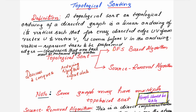I will give the definition for topological sorting, explain it with an example, and discuss the time complexity. A topological sorting, or topological ordering, of a directed graph is a linear ordering of its vertices such that for every directed edge u to v, u comes before v in the ordering. Vertices represent tasks to be performed and edges represent the constraints that one task must be performed before another.